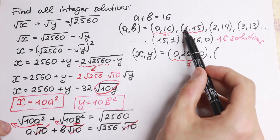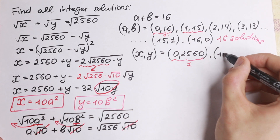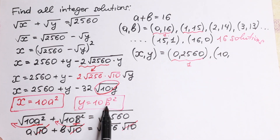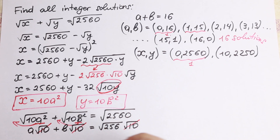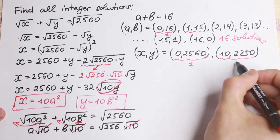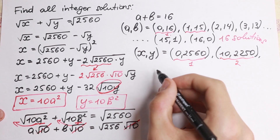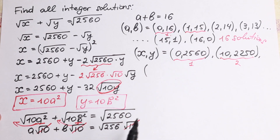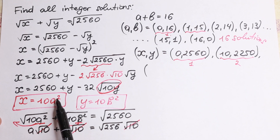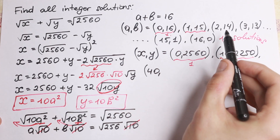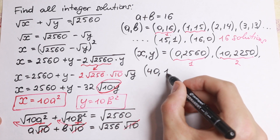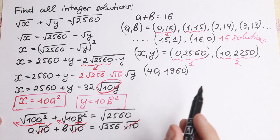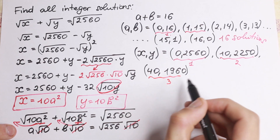For the second pair (a=1, b=15): x equals 10 times 1² equals 10, and y equals 10 times 15² equals 10 times 225 equals 2250. So the second pair is (10, 2250). For the third pair (a=2, b=14): x equals 10 times 4 equals 40, and y equals 10 times 196 equals 1960. For the fourth pair (a=3, b=13): x equals 10 times 9 equals 90, and y equals 10 times 169 equals 1690.